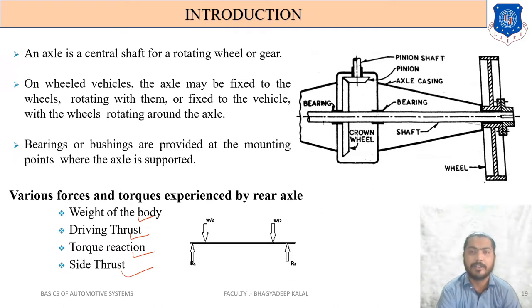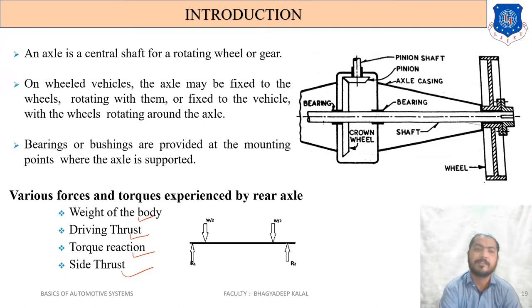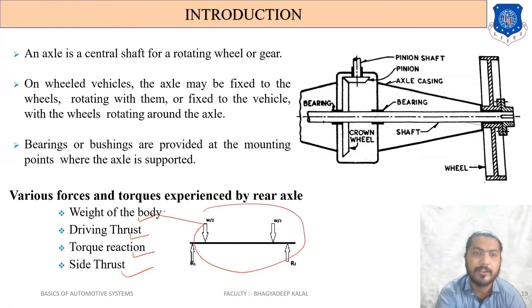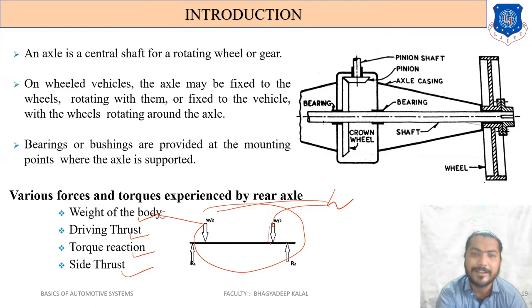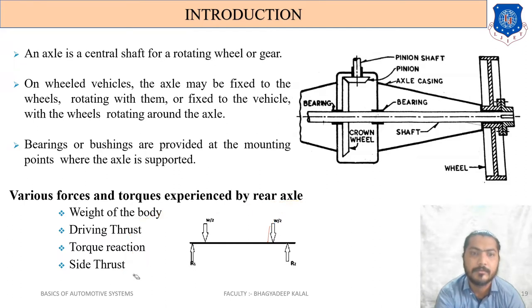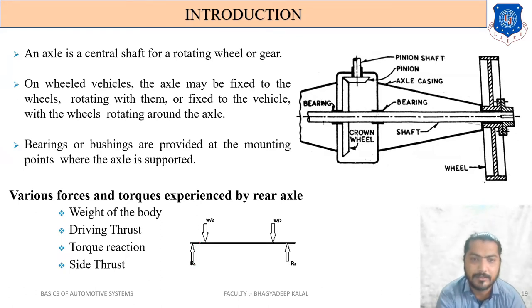Fourth is side thrust — when turning the vehicle, a side force comes on the wheel and is transferred to the axle, which is known as side thrust. The diagram shows the total weight W acting on the body, with W/2 acting on each side through the suspension onto the rear axles, giving reactions R1 and R2 at the two supports.